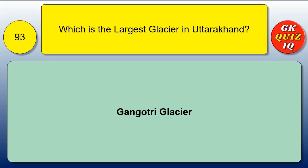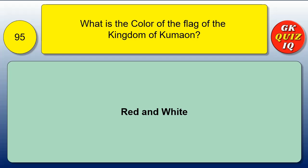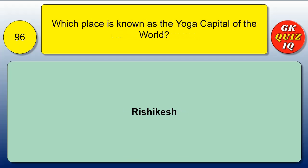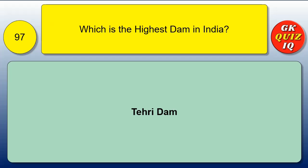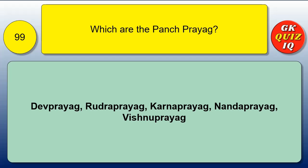Which is the largest glacier in Uttarakhand? Gangotri Glacier. What is the color of the flag of the kingdom of Garhwal? Green and white. What is the color of the flag of the kingdom of Kumaon? Red and white. Which place is known as the yoga capital of the world? Rishikesh. Which is the highest dam in India? Tehri Dam. What is the full form of UTC? Uttarakhand Transport Corporation. Which are the Panch Prayag? Devprayag, Rudraprayag, Karnaprayag, Nandaprayag, and Vishnuprayag.